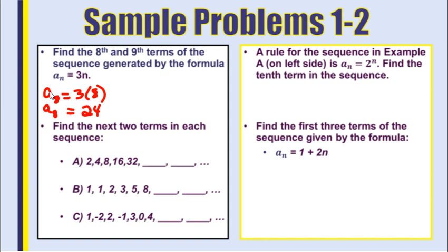To find the ninth term, I just put a 9 wherever I see an n. So I would have 3 times 9, and the ninth term would equal 27.